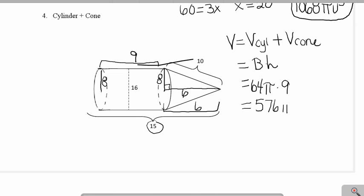To find the volume of the cone, I'm going to use the formula: area of the base times the height, divided by 3. I already know the area of the base is 64π, and the height of my cone I just found was 6, then divide by 3.